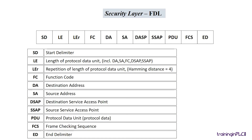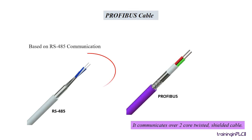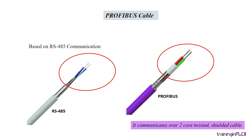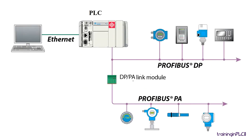PROFIBUS cable communication is based on RS-485. PROFIBUS uses a two-core twisted cable to communicate. It is used to interface controllers like PLC with slave modules, repeater stations, sensors, HMIs, ASI interface, actuators, etc.